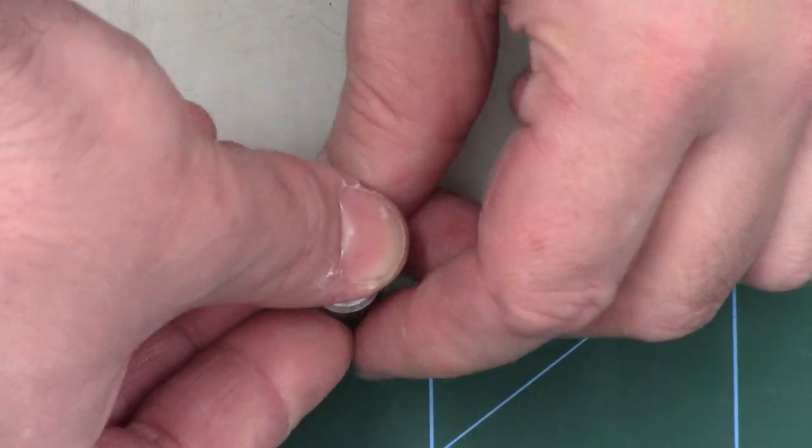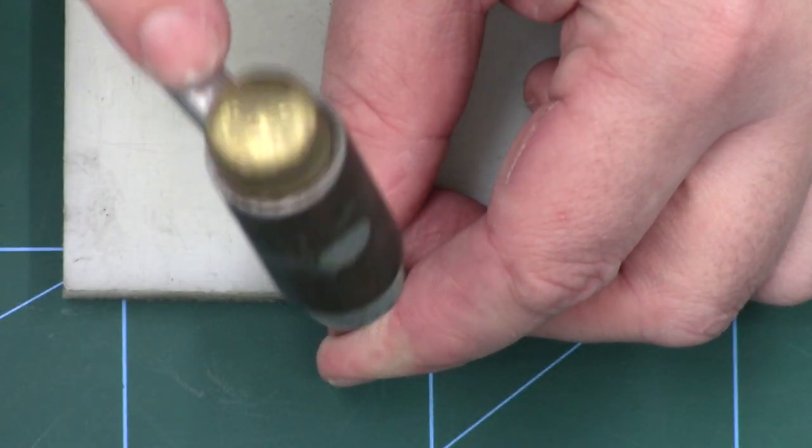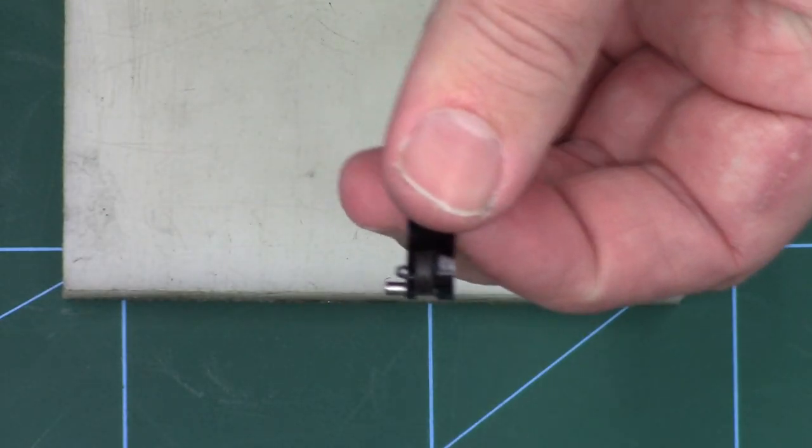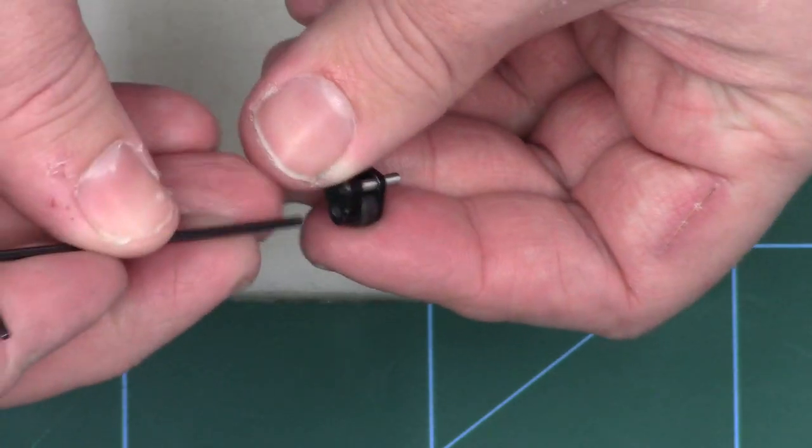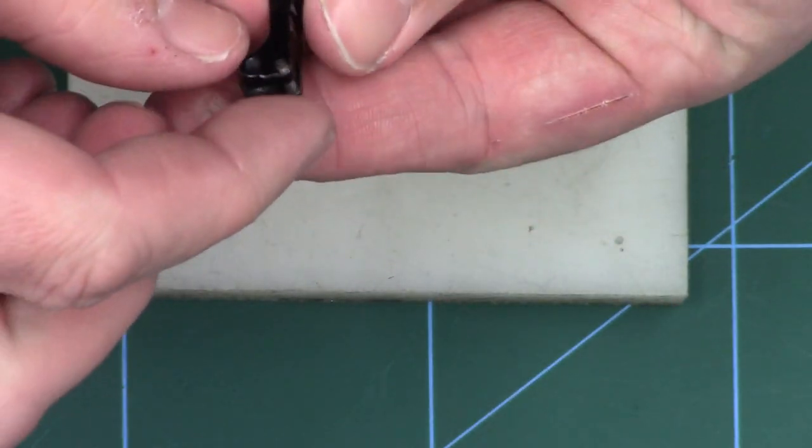So we'll just put the punch over, give it a few taps. Then we should be able to just push it out, like so.